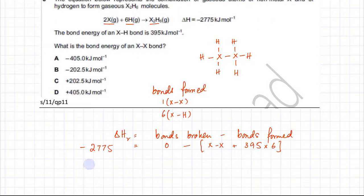And if you make it the subject of the equation, the X-X, it's going to be minus 2775, bringing this would be plus 395 times six is equal to minus the bond energy of X-X.